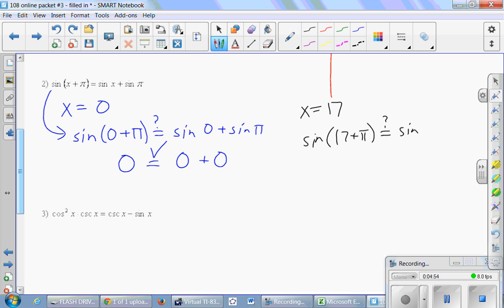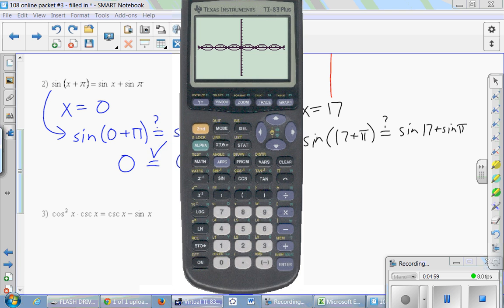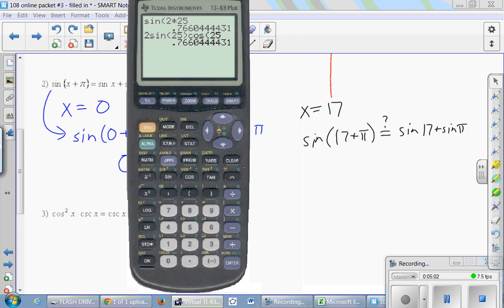So sine of 17 plus pi equals, with a question mark, sine of 17 plus sine of pi. And this is something that we'll have to use the calculator to help us. So what do we have here? Sine of 17 plus pi certainly is that number. And then sine of 17 plus, and again, it's silly to type sine of pi because that's zero, but it's that number. And they're not equal to each other. They are opposites. And maybe that's not so surprising if you think about the graph.